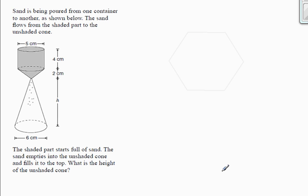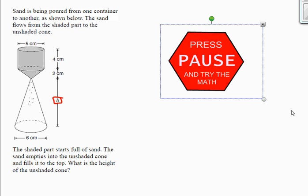Next question. So sand is being poured from one container into another as shown. And the sand flows from the shaded part to the unshaded cone. The shaded part starts off full of sand, it empties into the unshaded part, and it fills it perfectly. What is the height of the unshaded cone? So this is a volume question. I have to figure out the volume of sand at the beginning. So that's the shaded part. Then I know the volume of sand when this is full, and that'll help me solve for h. So again, I'd like you to pause the video at this point, try the math on your own, and I'll meet you on the flip side.